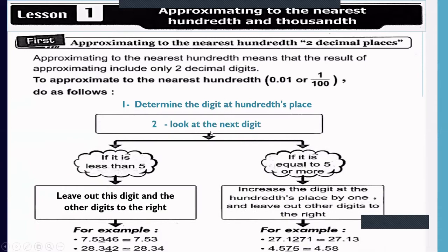How do we approximate any number to the nearest hundredths? Step one: determine the digit at the hundredths place. Step two: look at the next digit — the digit at the thousandths place. If that digit is less than five, cancel it and all digits to the right. For example, 7.5346: the hundredths digit is 3, the next digit is 4, which is less than 5, so we cancel — approximately 7.53.